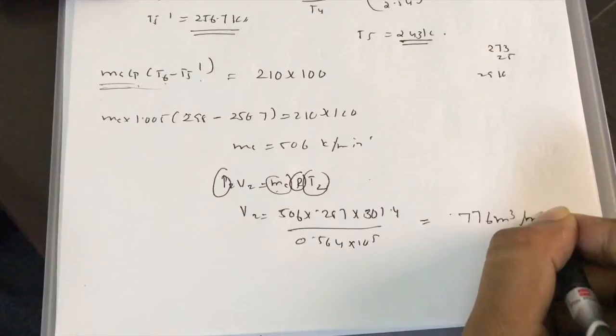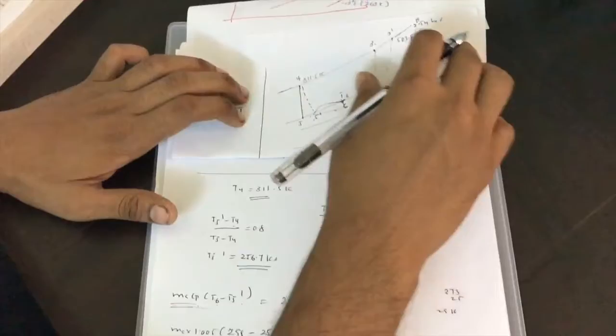The volume at the compressor inlet is 776 cubic meters per minute.